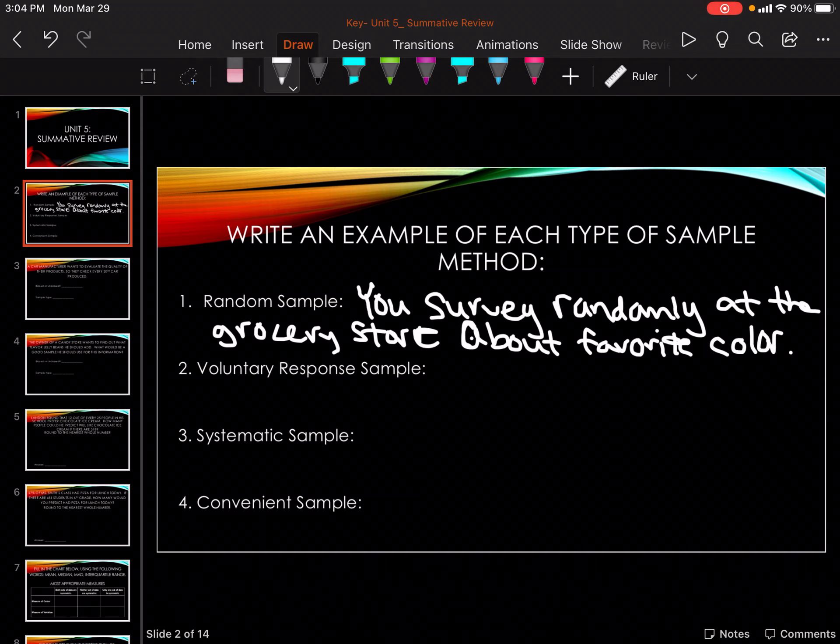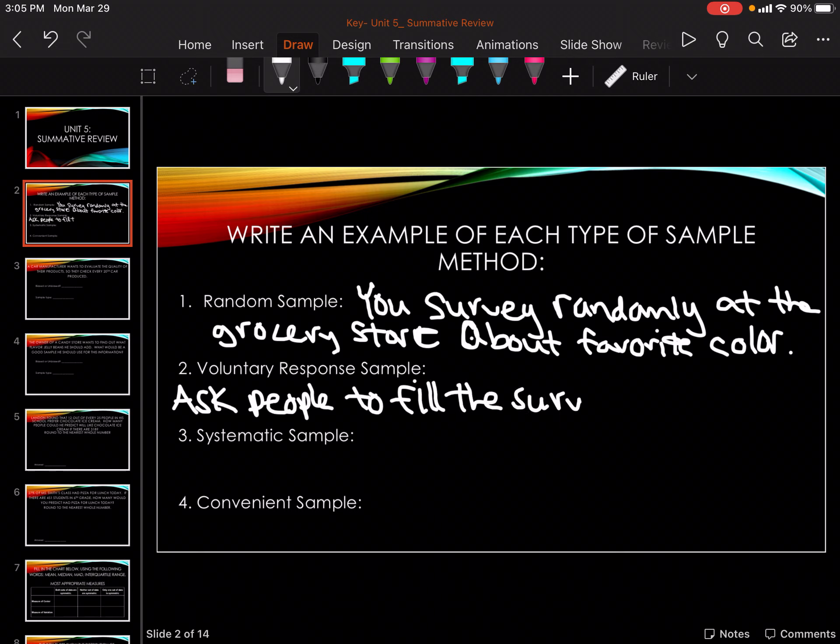Has nothing to do with anything at the grocery store and you're surveying randomly. The next one is voluntary response: ask people to fill out the survey on their Target receipt.